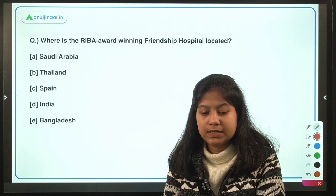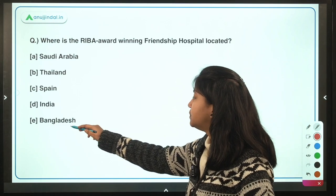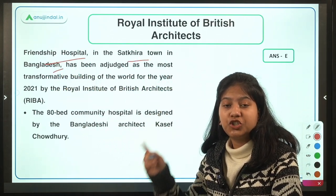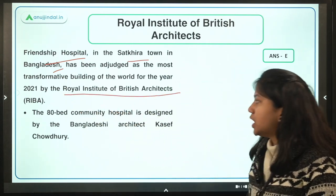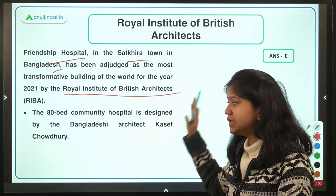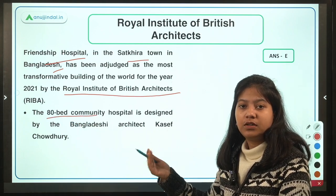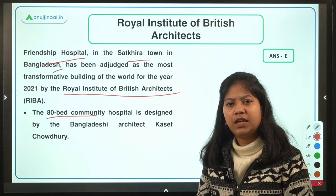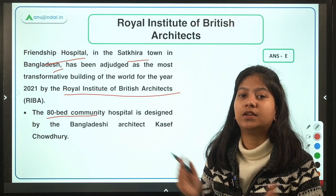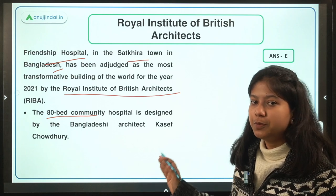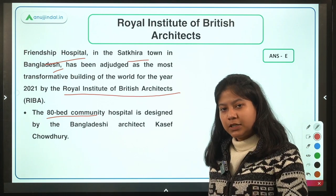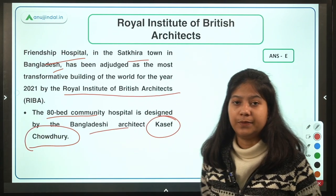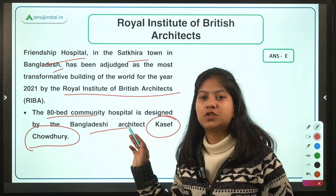The next question: where is the RIBA Award-winning Friendship Hospital located? The correct answer is Bangladesh. This hospital is located in Satkira town in Bangladesh and recently won the Royal Institute of British Architects award. It is an 80-bed community hospital, notable for being built in a sustainable manner with activities like water harvesting. The architect who designed this hospital is Kashef Chowdhury.